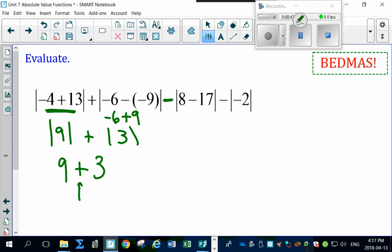Okay, now subtract it. 8 minus 17 is absolute value of minus 9. There's your subtraction right here. Absolute value of minus 9 is just plain old 9.